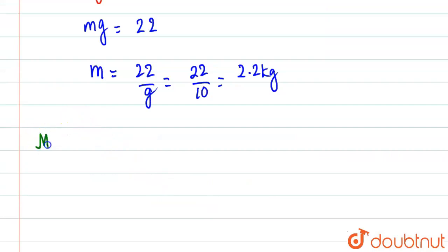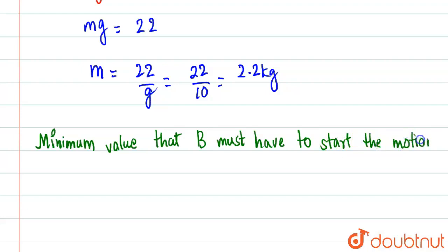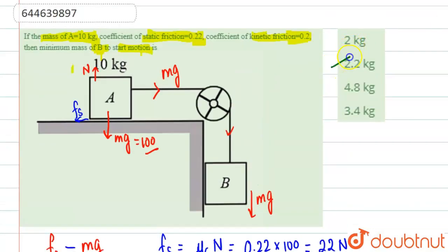The minimum that B must have to start the motion is basically 2.2 kilograms. So our answer will be option number B, 2.2 kilograms. Got it, thank you.